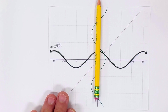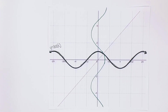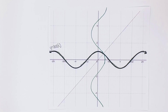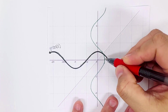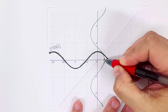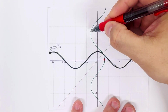Since the green graph is not a function, we need to restrict the original cosine graph so that its inverse becomes a function. There could be multiple ways to restrict it, but mathematicians have agreed on a specific way of restricting this function so that the green graph becomes a function.